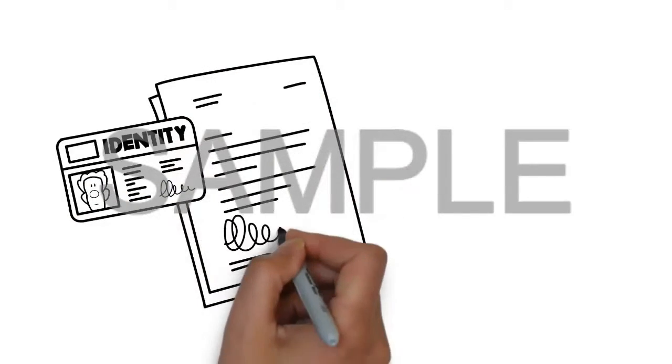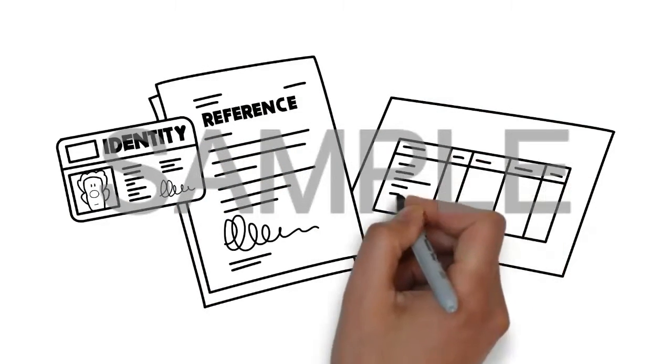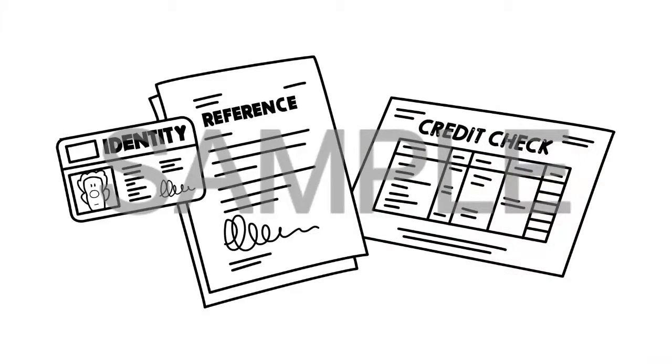If your tenant is a bad egg, it can take you six months to get them out. Many of these types of tenants can be filtered with good credit checks and requesting references the right way.